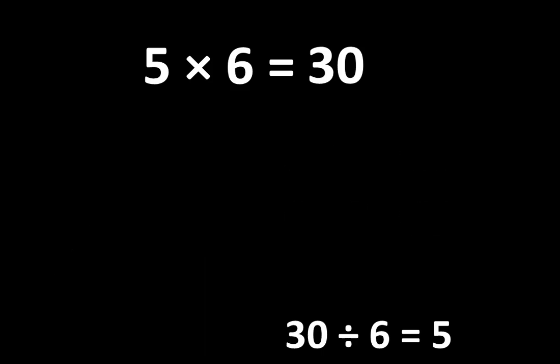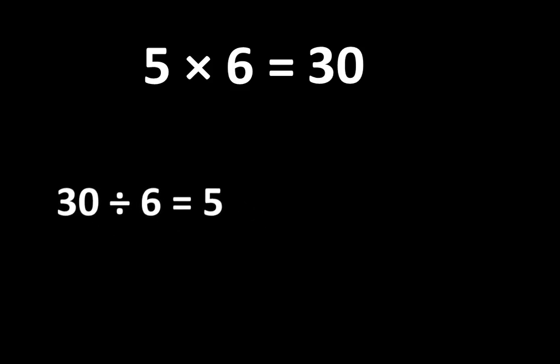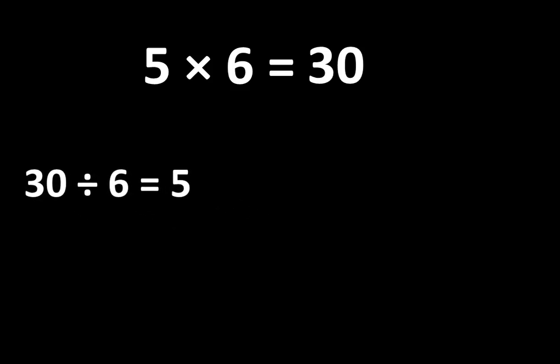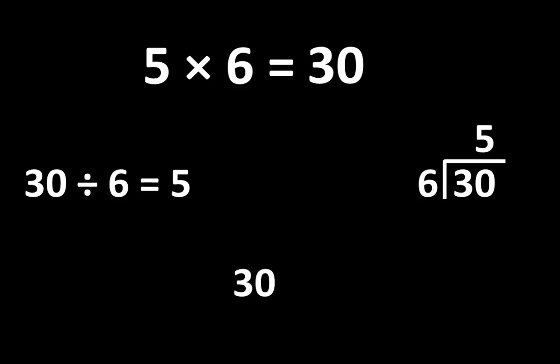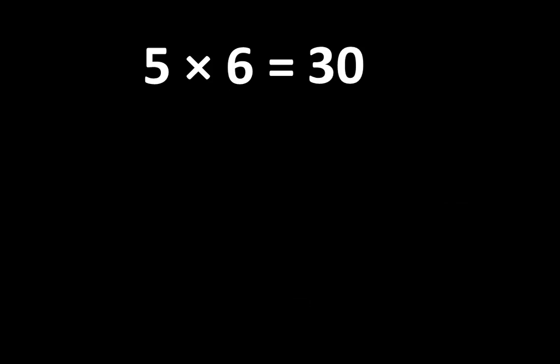And 30 divided by 6 is equal to 5. If we look at 30 divided by 6 is equal to 5, we can see that there are several different ways to write this idea. Understanding 5 x 6 is more than simply knowing that the product is 30.